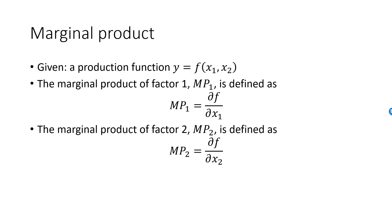Keep in mind that marginal products only exist if the production function is differentiable. For example, if we have a production function where the factors are perfect complements, then the marginal products are not defined at the corners of the isoquants. The min function is not differentiable if the arguments are equal. Also, keep in mind that the marginal products depend on the amount that we use of the production factors, x1 and x2.